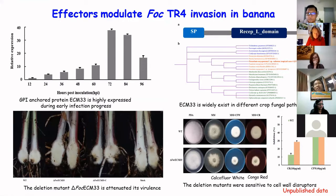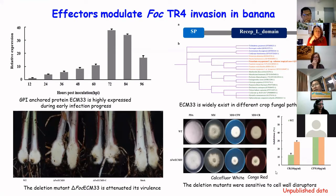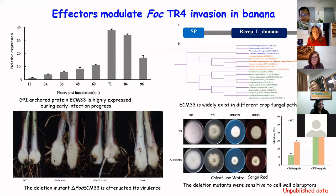The first effector we analyzed is ECM33, from the core region. It belongs to the GPI-anchored protein family. It is highly expressed during early infection and widely exists in different crop fungal pathogens. We knocked it out, and the knockout mutants nearly lost pathogenicity completely. We analyzed the mechanism and found that knockout mutants produce much more chitin in the cell wall, making the cell wall very fragile and sensitive to cell wall disruptors like Congo red.